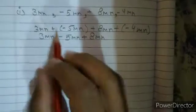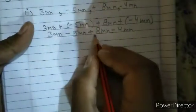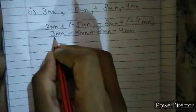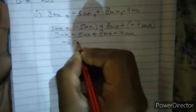So let's solve it. 3mn minus 5mn plus 8mn and minus 4mn. So this would be 3mn minus 5mn is minus 2mn.